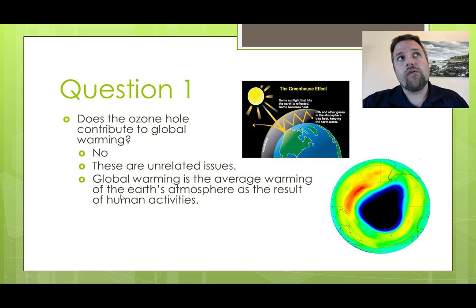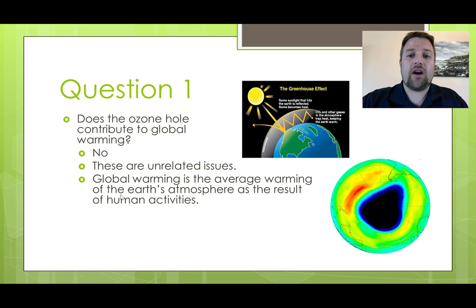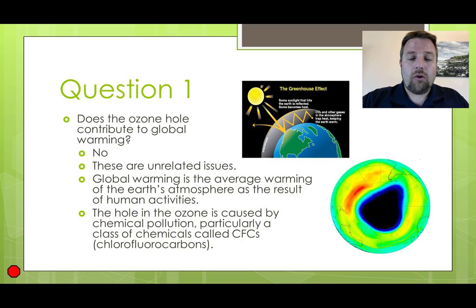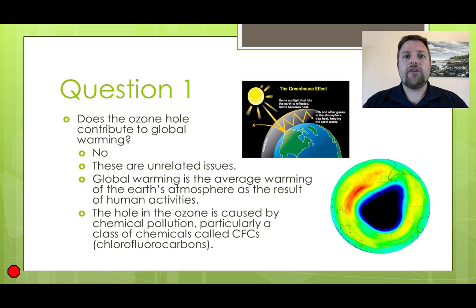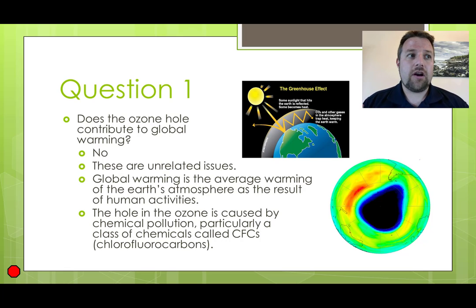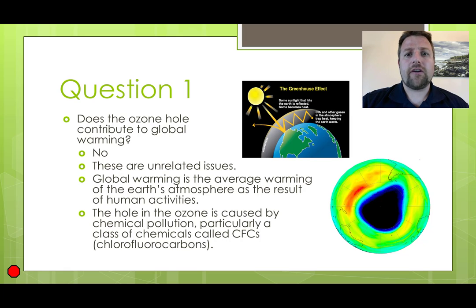Global warming is the overall average warming of the Earth's atmosphere, typically due to human activity, mainly because of carbon dioxide and methane. The ozone hole is a different problem where chemicals we produced in the past — CFCs, chlorofluorocarbons — typically used as refrigerants and propellants in spray bottles, made it all the way up into the upper atmosphere, chemically broke down ozone molecules, and that ozone hole has caused significant problems, especially for the southern hemisphere.